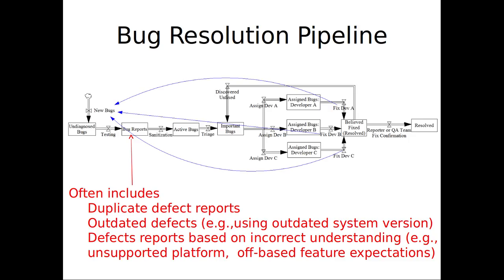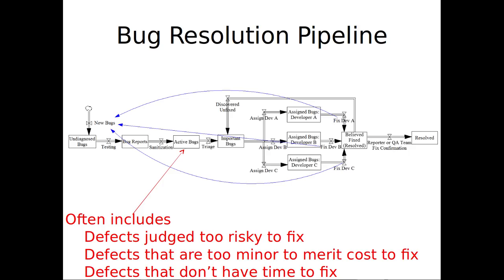Someone may be operating on an old version of the software and report something, but we knew about that four weeks ago and it's been fixed — they just haven't updated their configuration. This happens a lot. After sanitization, you get active bugs. These are bugs which have been sanitized in the sense that they're not duplicates, they're meaningful bug reports about the current version of the system based on a sound understanding. But active bugs do include bugs judged too risky to fix, bugs too minor to merit the cost to fix, or bugs that we don't have time to fix.